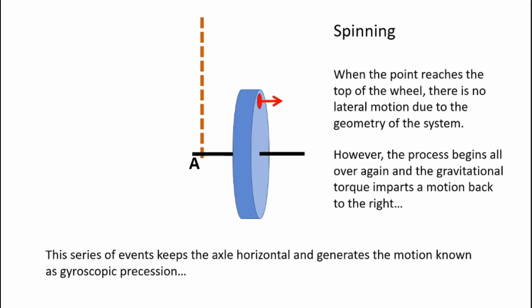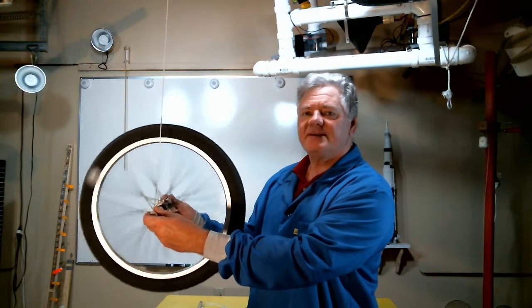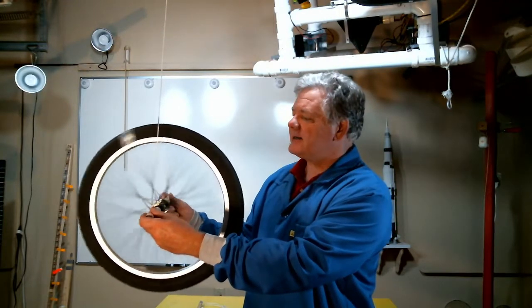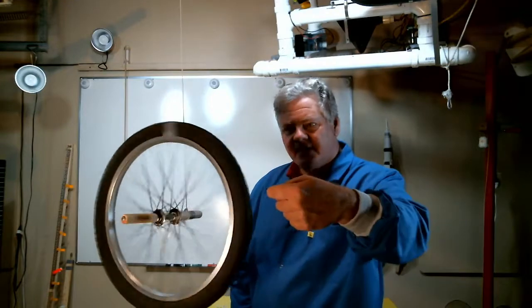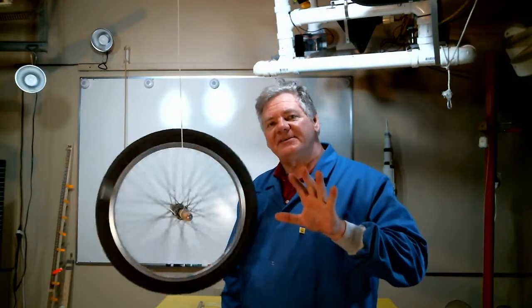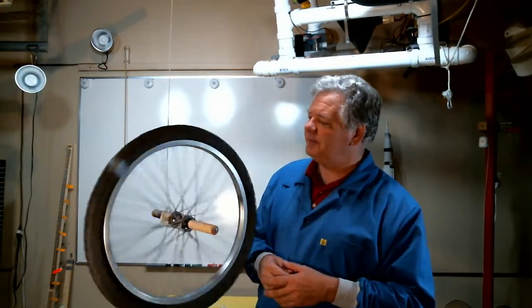So let's take a look at the real system and see how it behaves. Now I have my wheel spinning — let's see if the theory is correct. I let go of the axle and sure enough the axle remains mysteriously horizontal, and you see the rotation around the vertical axis — that is the gyroscopic precession. So that's pretty cool.